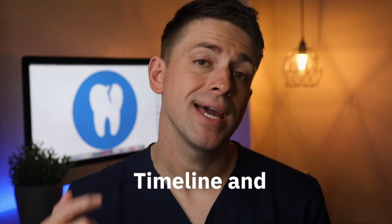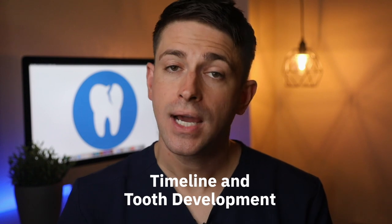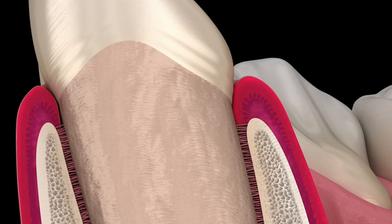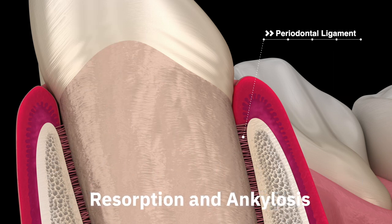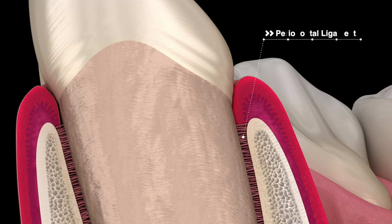Treatment for an avulsion depends on what you have discovered in your diagnosis. There are two important things to consider when treating avulsions: timeline and development of the tooth. Timeline is important because it relates to the viability of the PDL cells. If PDL cells are dried out or necrotic, there will be a higher likelihood of healing complications such as resorption or ankylosis. Critical times to consider are immediate re-implantation, less than 60 minutes out of the mouth, or greater than 60 minutes out of the mouth.